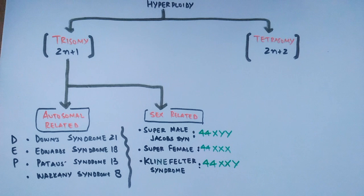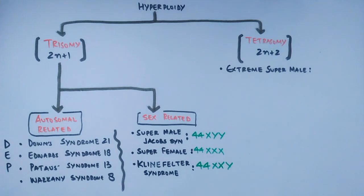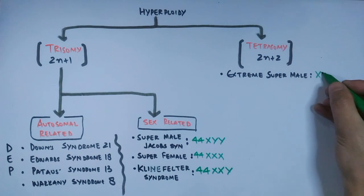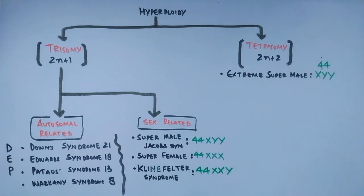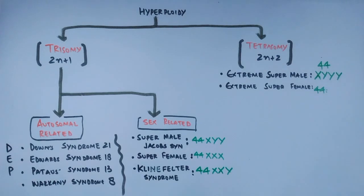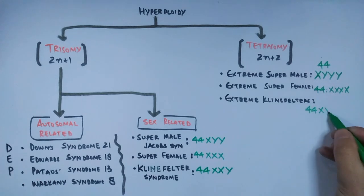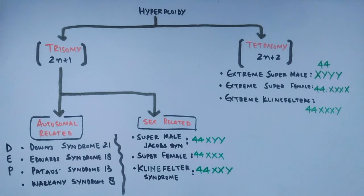In tetrasomy, there are two extra chromosomes, taking the condition to 2n+2. Examples in humans include Extreme Super Male, where males have two extra Y chromosomes giving 44+XYYY; Extreme Super Female, where females have two extra X chromosomes giving 44+XXXX instead of the normal 44+XX; and Extreme Klinefelter syndrome, where males have two extra X chromosomes giving 44+XXXY instead of the normal 44+XY.